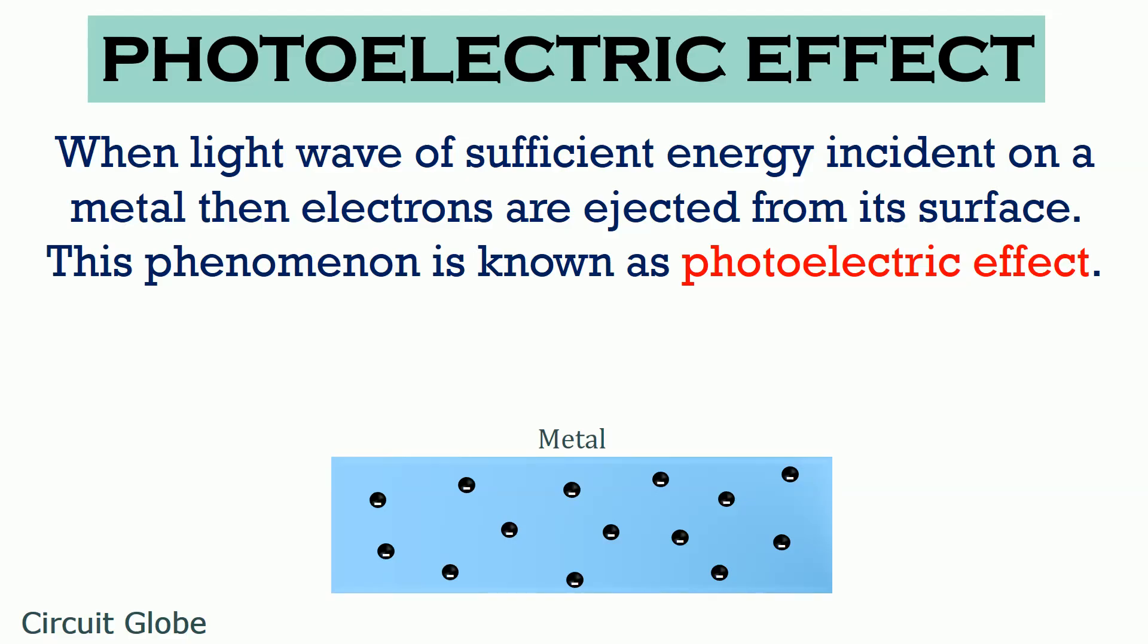Friends, when light energy in the form of photons or particles strikes a metal piece with sufficient energy, then electrons are ejected or emitted from the surface of the metal. This effect is known as photoelectric effect or photoelectric emission. Now let's see how this happens.